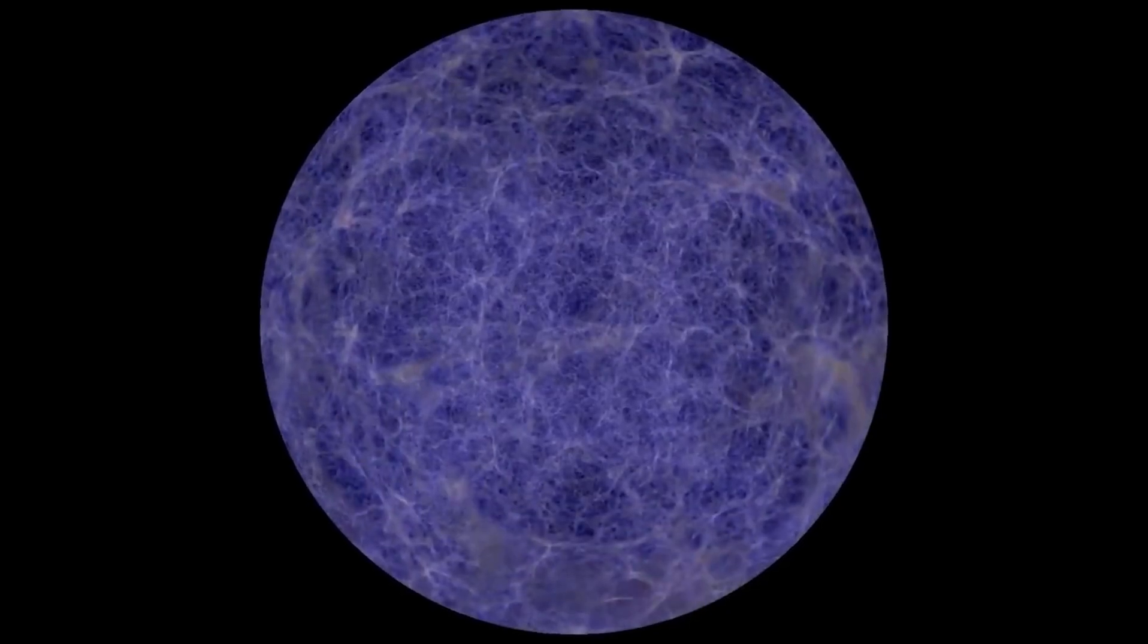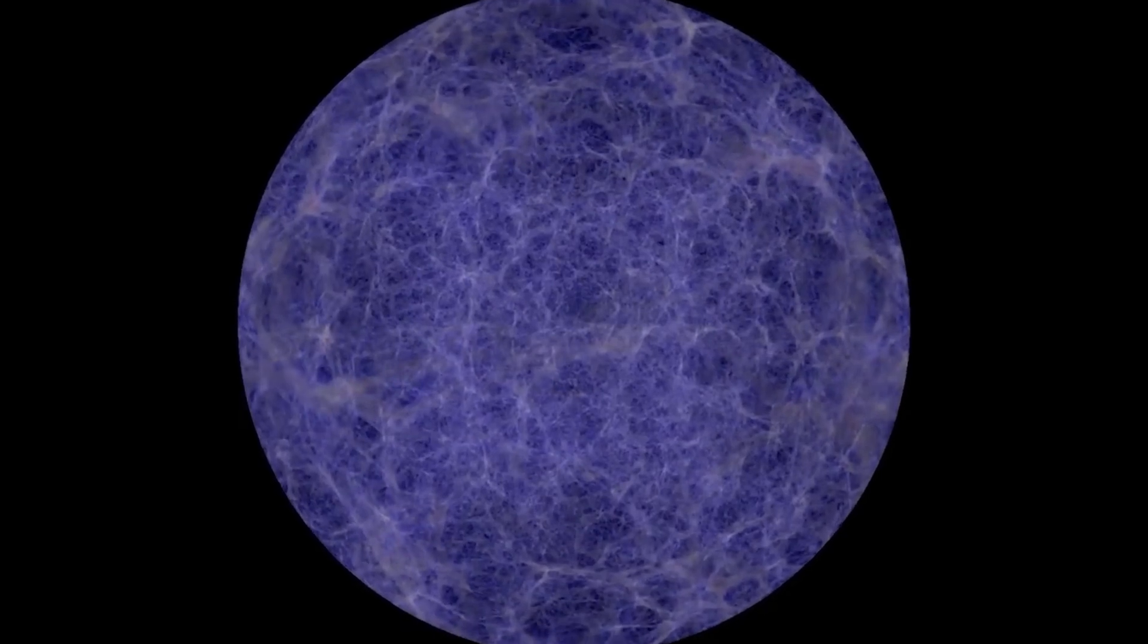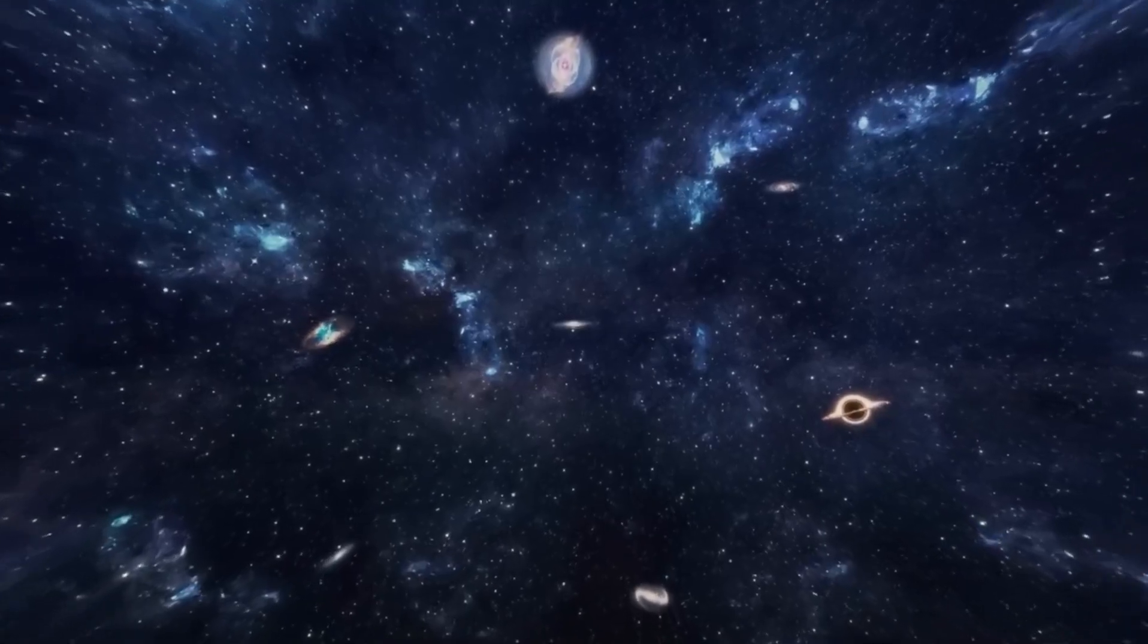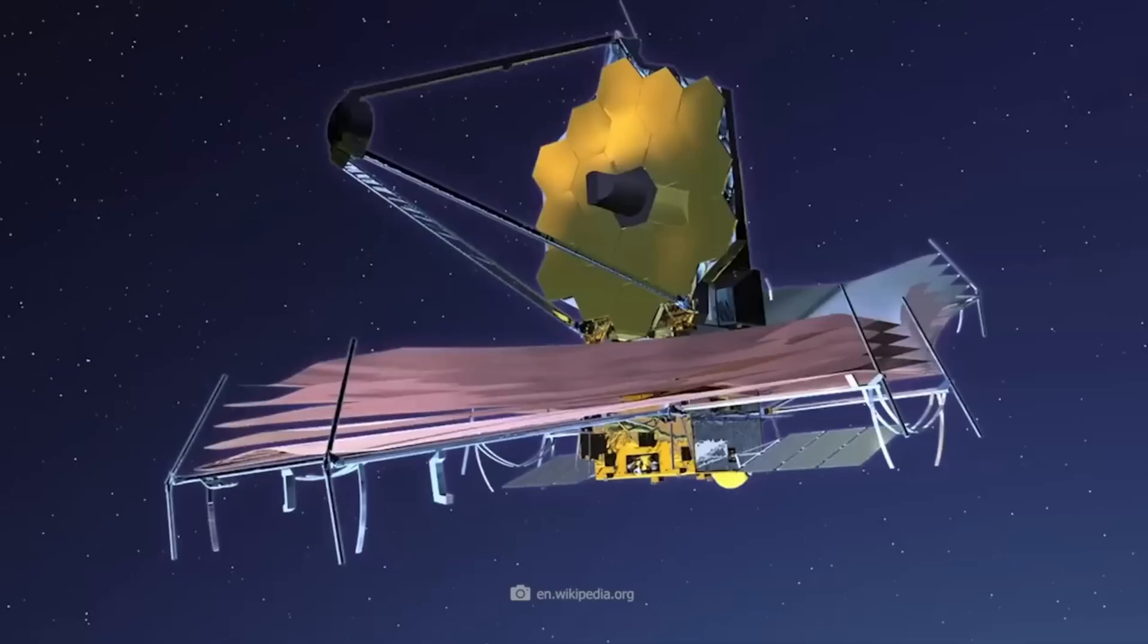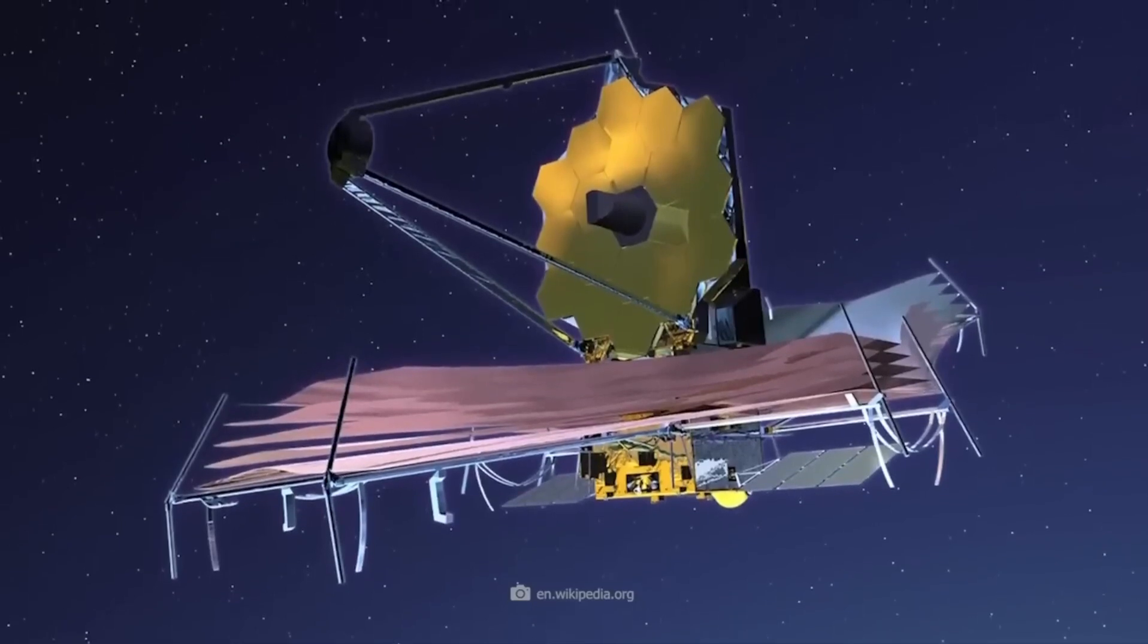According to the Standard Model of Cosmology, after the fiery Big Bang 13.8 billion years ago, the universe cooled, and energy turned into matter, eventually coalescing during the first few hundred million years, forming the first generation of stars and galaxies.